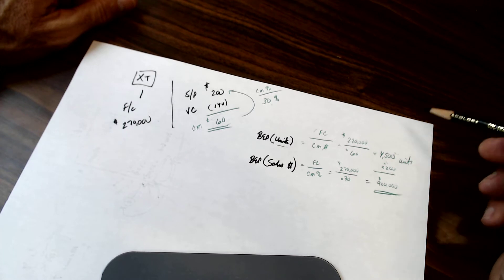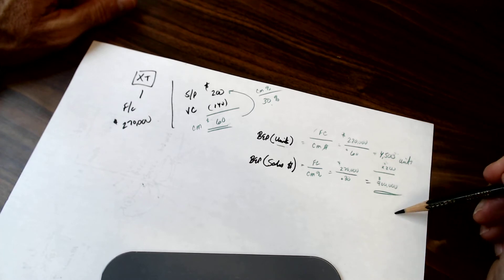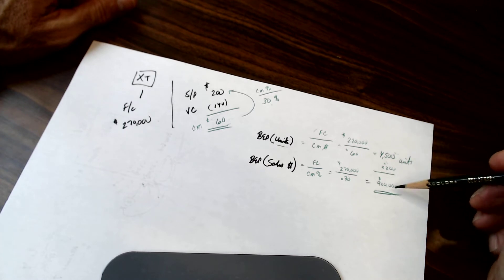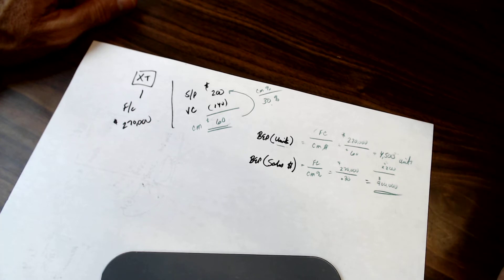If my current level of sales is a million, I've got a margin of safety of $100,000 — I'm $100,000 above the break-even point. They're not asking for that, but that's part of the chapter.